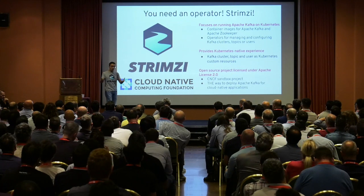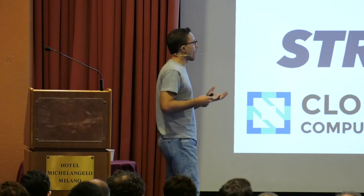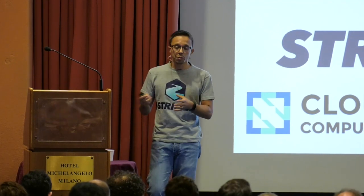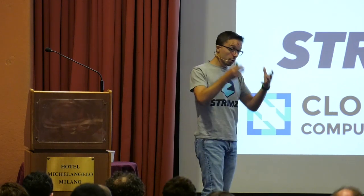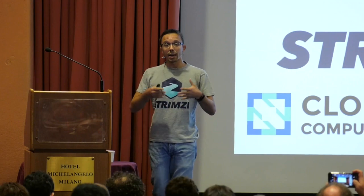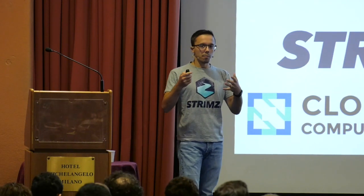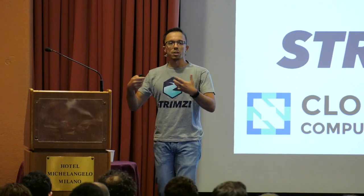Strimzi is what I consider the way to deploy Kafka on Kubernetes in a cloud-native way. Strimzi provides images for Kafka and ZooKeeper running on OpenShift and Kubernetes. When you install the Strimzi operator, you get custom resources: a Kafka resource, a KafkaTopic, KafkaUser, and so on.